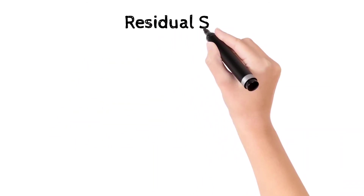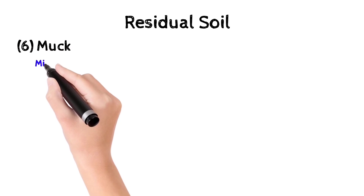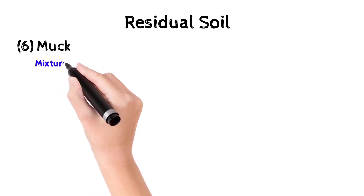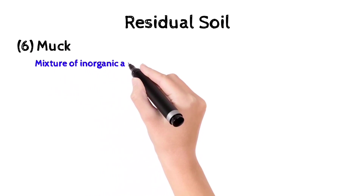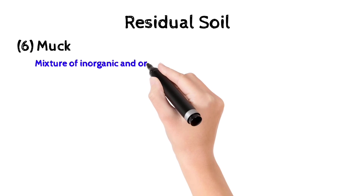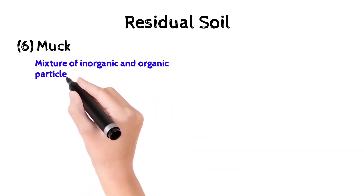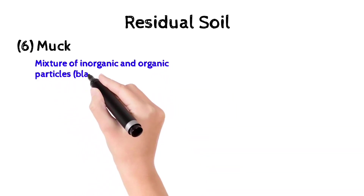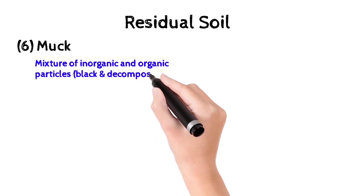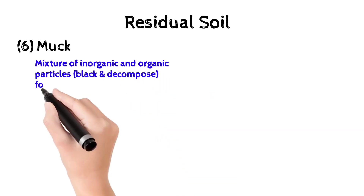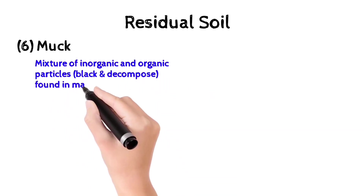The next classification of residual soil is muck soil. It is a mixture of inorganic and organic particles which is black and decomposed, found in marshy or swampy areas and after overflow of a river. Its example is the Sundarbans.